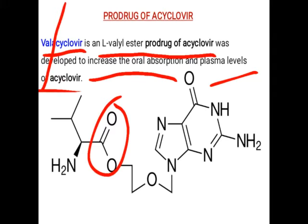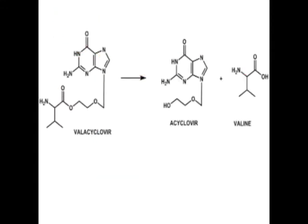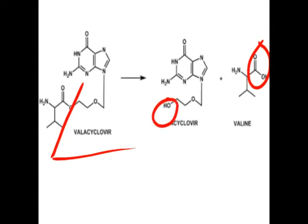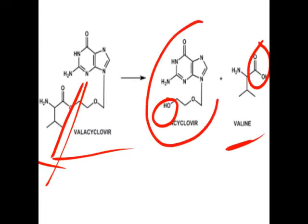Due to ester formation in valacyclovir, it increases oral absorption, increases the duration of activity, and increases the plasma level of acyclovir. When hydrolysis of valacyclovir takes place at the ester position, it forms one acid and one alcohol. The acid formed is valine, the carboxylic acid-containing amino acid, and the remaining part is acyclovir — the actual drug — which then enters the cell and is converted into monophosphate, diphosphate, and triphosphate, inhibiting DNA chain elongation.